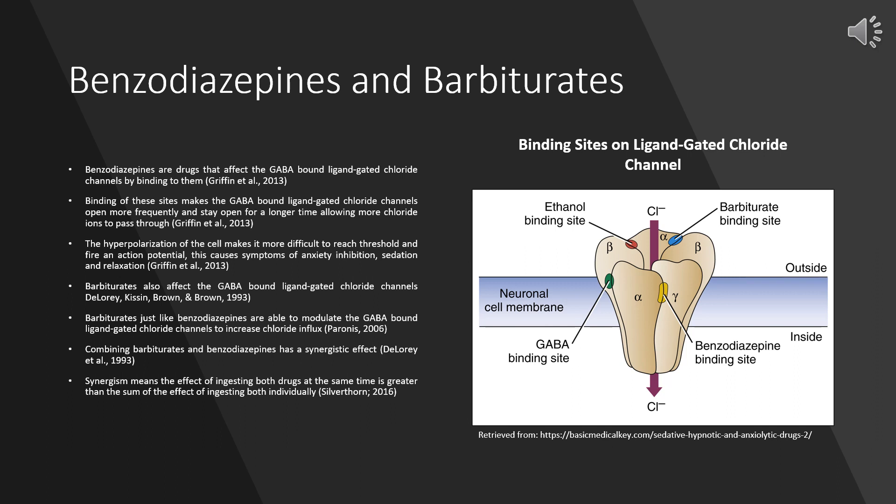Benzodiazepines are not the only class of drugs that can bind and affect the GABA-gated ligand-gated chloride channels — barbiturates can too, as seen in blue in the image to the right. Barbiturates, just like benzodiazepines, are able to modulate the GABA-gated ligand-gated chloride channels to increase chloride influx. Worryingly, combined barbiturates and benzodiazepines don't simply have additive effects but are synergistic — meaning the effect of ingesting both drugs at the same time is greater than the sum of each individually. Considering the symptoms caused by a greater influx of chloride ions, there is good reason to avoid the synergistic effect of combining barbiturates and benzodiazepines.